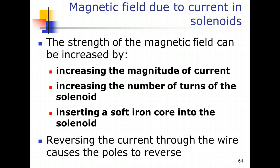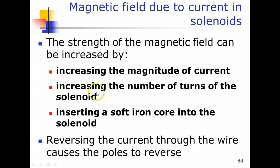There are three factors that affect the strength of a magnetic field inside a solenoid. First, the size of the electrical current flowing in the solenoid — increasing the magnitude of current increases the field strength. Second, increasing the number of turns of the solenoid. Third, inserting a soft iron core into the solenoid. A soft iron core is a magnetic material that can be easily magnetized and demagnetized, and having it inside the solenoid helps to strengthen the magnetic field.